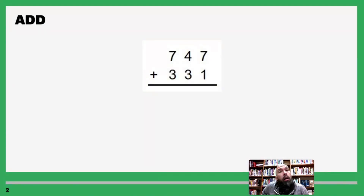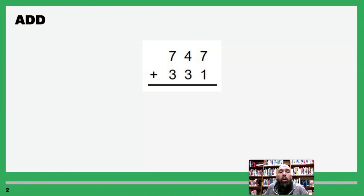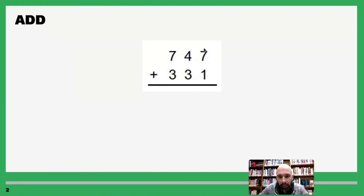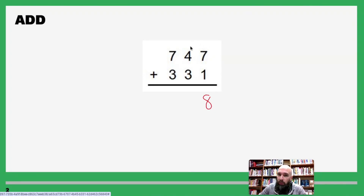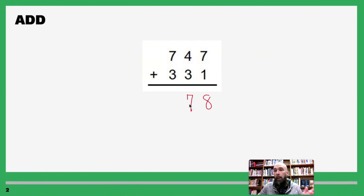We are going to be adding larger digit numbers — this is going to be three digits plus three digits. Whenever you're adding numbers like this, you start at your ones place value, all the way to the right. Add those numbers up: seven plus one is eight. If that number was ten or bigger we'd do something slightly different, but that didn't happen here. So now we move to our next place value — our tens: four plus three is seven.